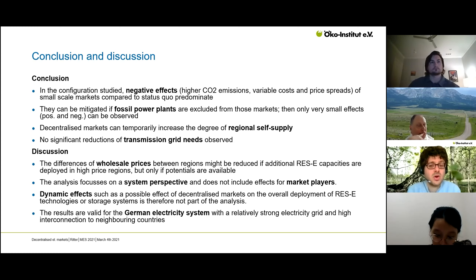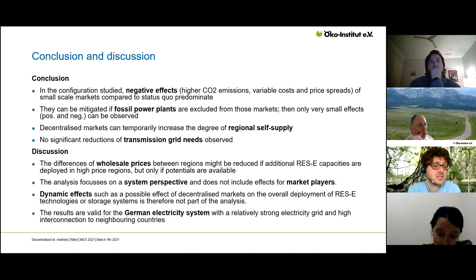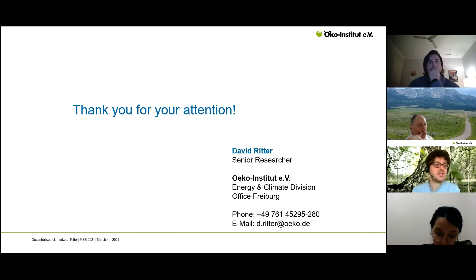Conclusions: in the configurations studied, the negative effects of decentralized markets — higher emissions, variable costs, and price spreads — predominate compared to the status quo. These can be mitigated by excluding fossil plants, but then only very small positive or negative effects remain. Decentralized markets can temporarily increase regional self-supply during the energy transition, but no significant reduction in transmission grid needs was found. Price differences between regions can be reduced by building additional renewables in high-price regions, but only where potentials exist.